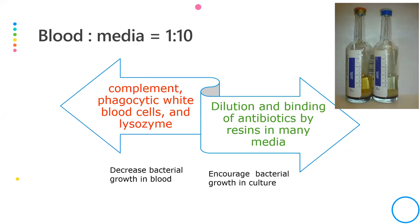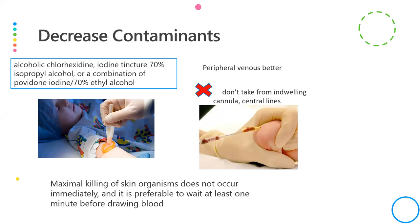The optimal ratio between blood and culture media is 1:10. Blood contains complement, phagocytic cells, and lysozymes that inhibit bacterial growth, while the culture bottle provides dilution, culture media, and resins that bind antibiotics and favor bacterial growth. This 1:10 ratio must be maintained for optimal growth.